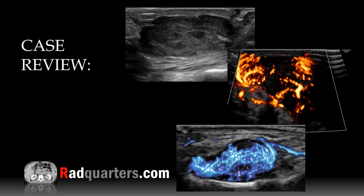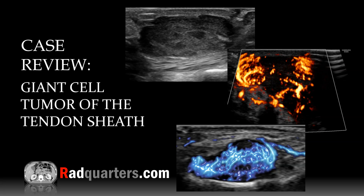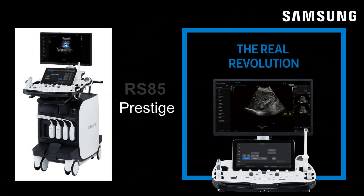Welcome to RadQuarters. Today we'll be talking about ultrasound of giant cell tumor of the tendon sheath. I'm Dr. Dan Koval. This episode is sponsored by Samsung Ultrasound. The beautiful images you're about to see were obtained on a Samsung RS-85 Prestige ultrasound unit. We're going to look at some examples of giant cell tumor of the tendon sheath as well as a mimic, and I'll highlight key teaching points throughout.